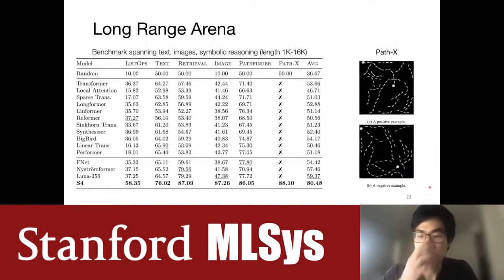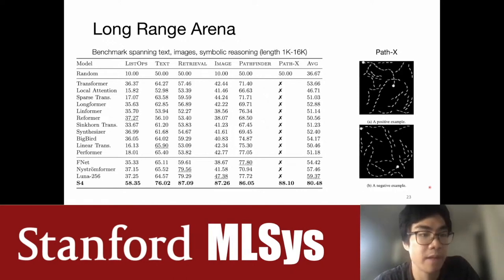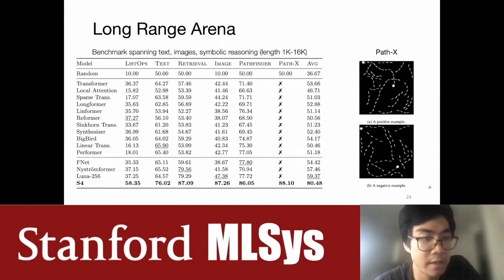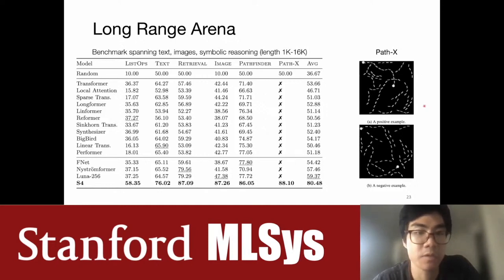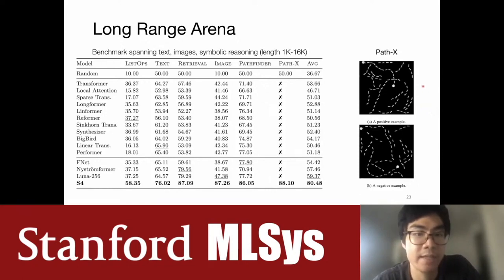Here's the Long-Range Arena dataset, which has six tasks spanning all sorts of sequence lengths. As a model that is generically good at long-range dependencies — due to the previously mentioned HIPPO theory — S4 achieves state-of-the-art on every single task. The most interesting result is the PathX task, another image classification task where you see a sequence of pixels from a high-resolution image of length 16,000 and must identify whether markers are connected. This task is so hard that no previous sequence model has solved it, and even ResNet-18 can't solve it given the 2D version. S4 is the first model to solve this task.